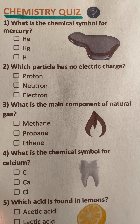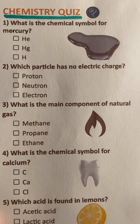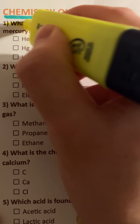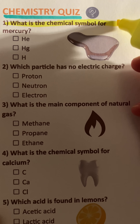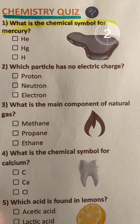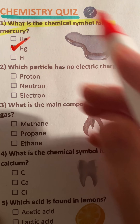Chemistry quiz. If you don't get 5 out of 7, you need to go back to school. Question 1. What is the chemical symbol for mercury? Hg.